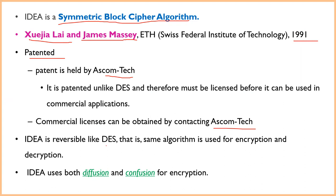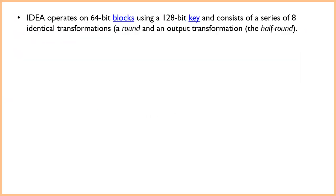IDEA is reversible — the same algorithm is used for both encryption and decryption. It uses both diffusion and confusion processes. IDEA operates on 64-bit blocks using a 128-bit key and consists of a series of eight identical transformation rounds plus an output transformation.